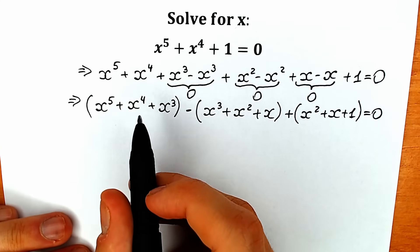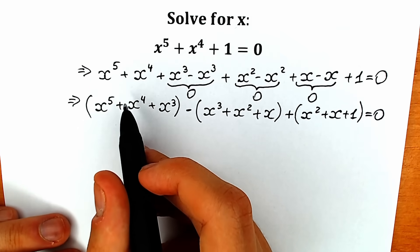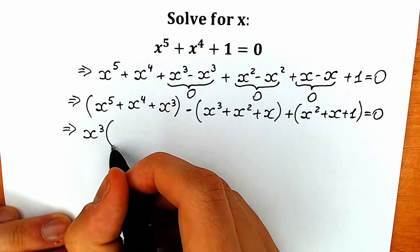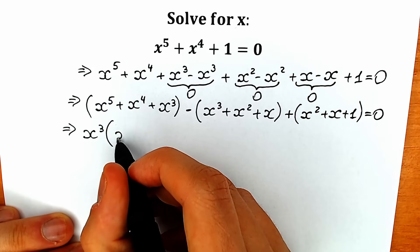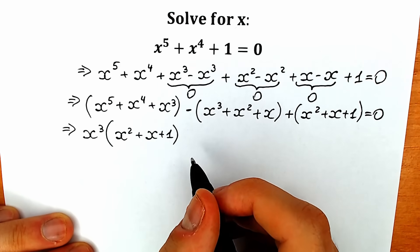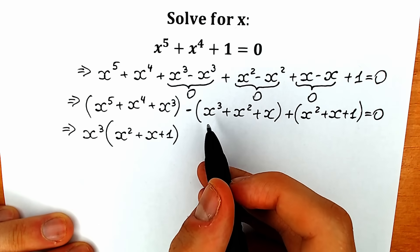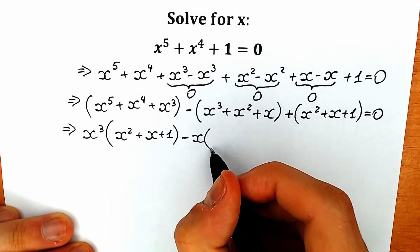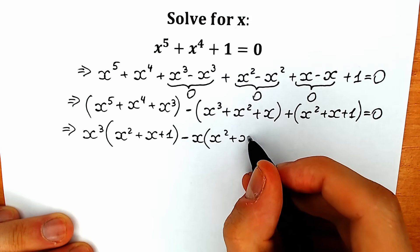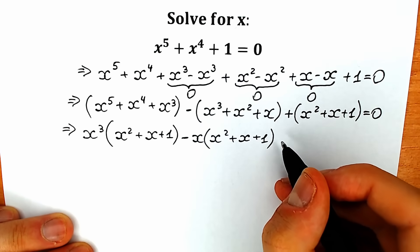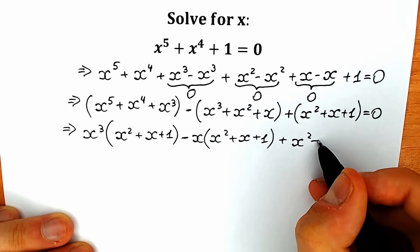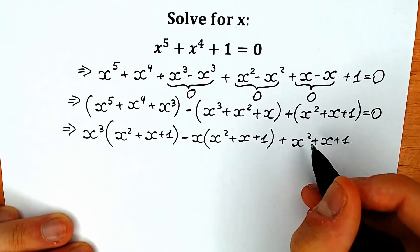Right now let's factor from the first parenthesis. We can easily factor x cube, so inside that parenthesis we will have x square plus x plus one. In the second parenthesis we can also factor x, so we have minus x, and inside we have x square plus x plus one. In the last parenthesis we can't factor anything, so we have plus x square plus x plus one.